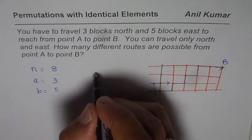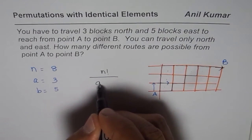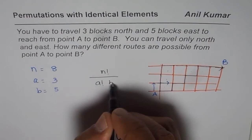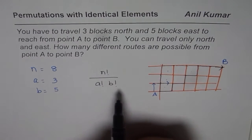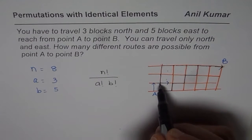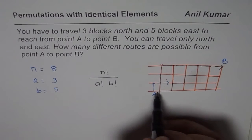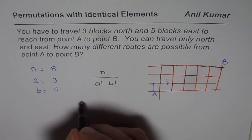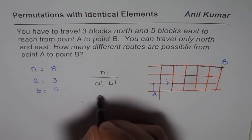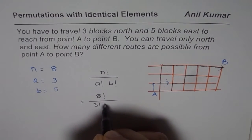...let us apply the formula N factorial over A factorial times B factorial, since A and B are similar repetitions. A is going north and B is going east. Applying the formula, we get 8 factorial divided by 3 factorial times 5 factorial.